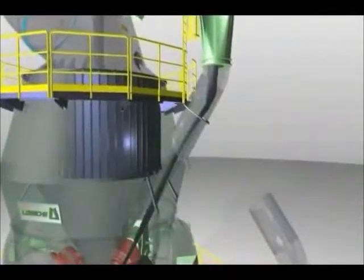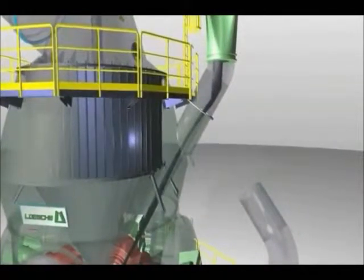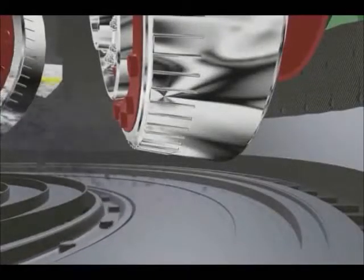The raw coal is delivered to the grinding table via the feeding chute. When the material feed is switched on, the grinding rollers are lowered and the comminution process starts.